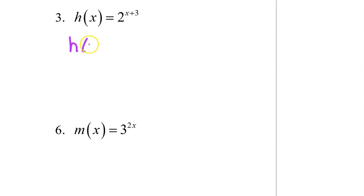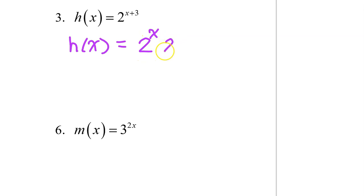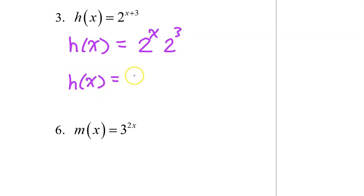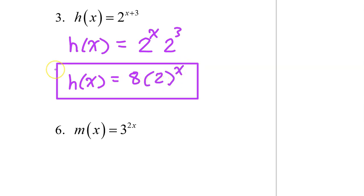h of x equals 2 to the x plus 3 power can be rewritten as 2 to the x power times 2 to the 3rd. 2 to the 3rd power is 8, so putting that in front gives us 8 times 2 to the x power.